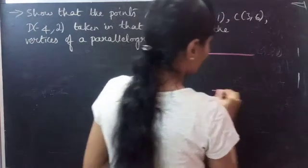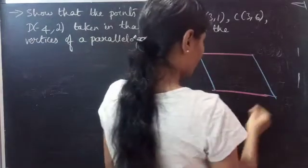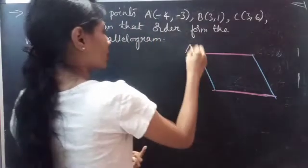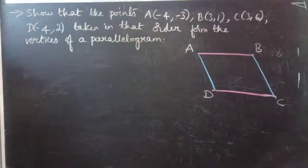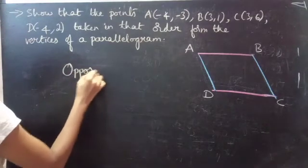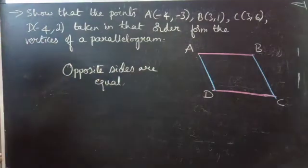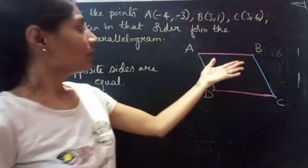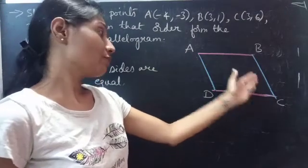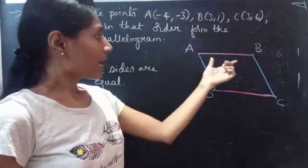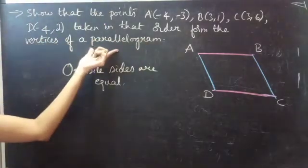Consider a parallelogram, name it as A, B, C and D. We know that in a parallelogram opposite sides are equal. So here we should get that the distance AB is equal to distance DC, and distance AD equals to distance BC. If we get AB equals DC and AD equals BC, then we can say that the points form the vertices of a parallelogram.